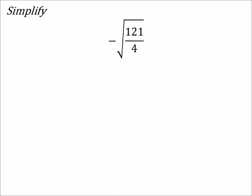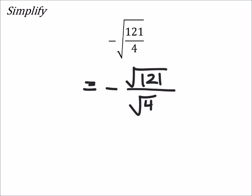We said we couldn't take the square root of any negative numbers, but that does not mean we can't take the negative of a square root. All this is saying is that we're going to take the opposite — the negative — of whatever the square root of 121 divided by 4 is. So this would give us the negative square root of 121 over the square root of 4.